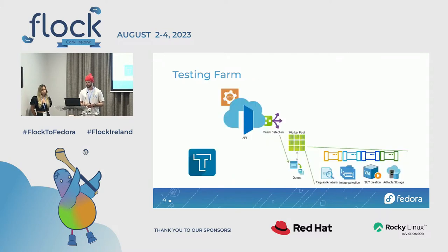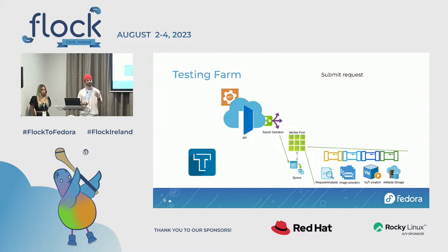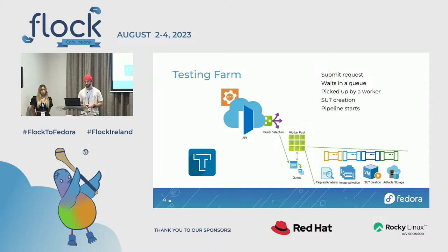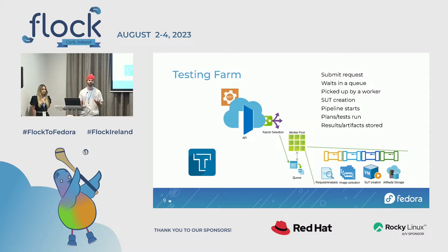Testing Farm is also used by Packit. There are lots of moving components, but there's one API endpoint that your test is submitted to. You submit a JSON POST request to the API, the ranch is selected, your request waits in a queue, it gets picked up by a worker, the system under test gets created and installed with a fresh OS of your choice. Then the pipeline starts to execute your tests on that fresh system, the plans run, and the results and artifacts are stored. You can access these even after the VM is destroyed, because they're in artifact storage.